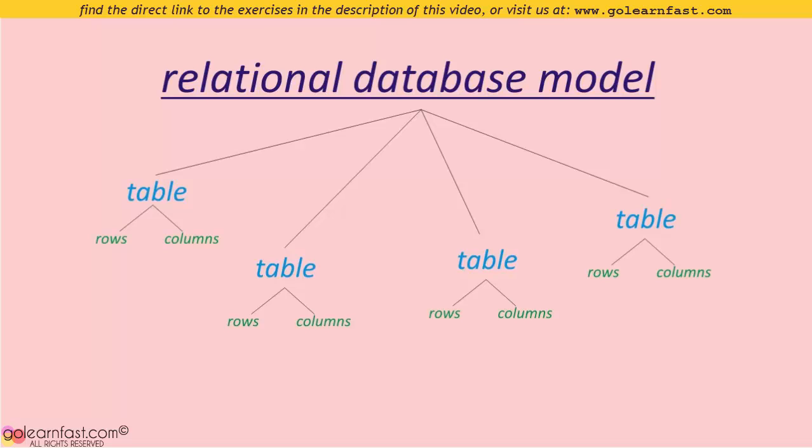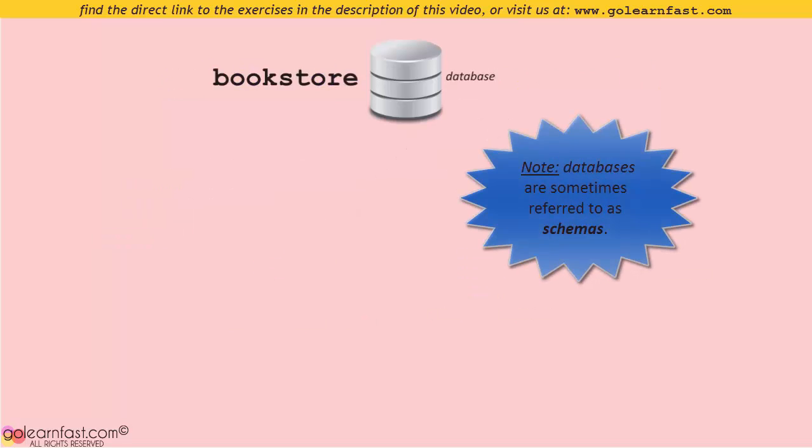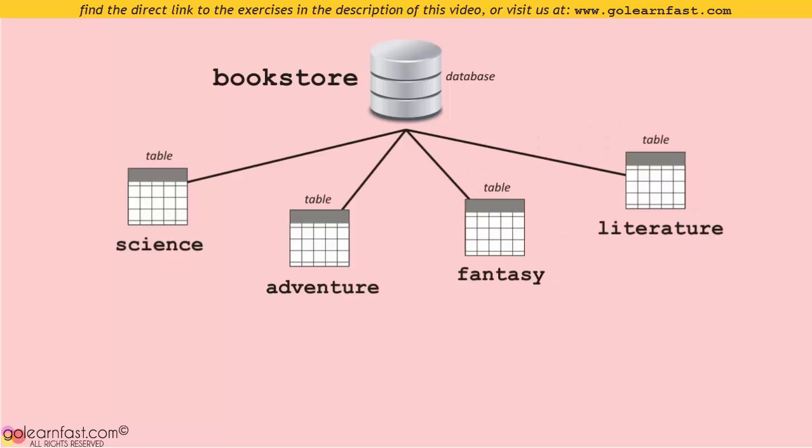The model for a relational database states that data is stored in one or more tables. Each table consists of rows and columns. Let's have a closer look at it. This is a database, imagine it as the representation of a bookstore. The data in a database are stored in one or more tables. You can think of each table as the representation of a single section of a bookstore like science, adventure, fantasy, or literature.